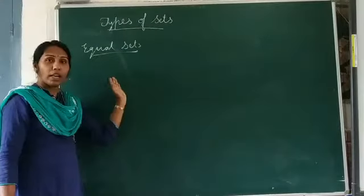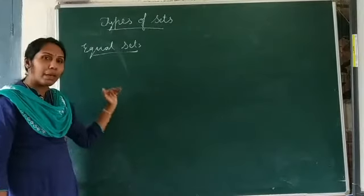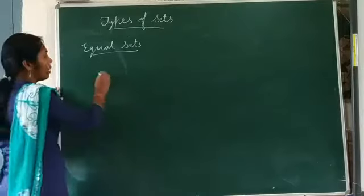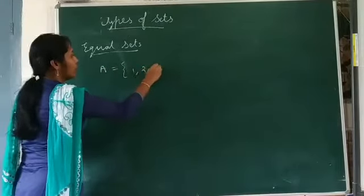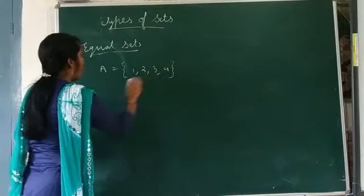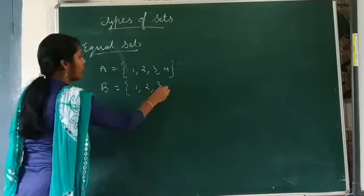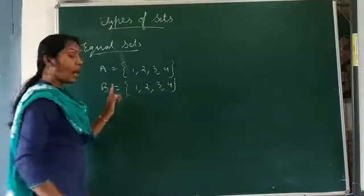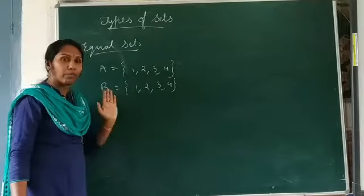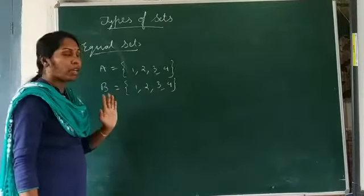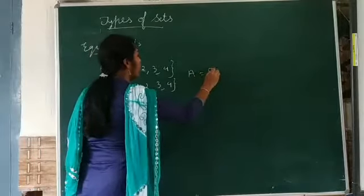Now, let us see what are equal sets. If two sets have exactly the same elements, they are known as equal sets. For example, A is equal to {1, 2, 3, 4} and B is equal to {1, 2, 3, 4}. Both of these sets have equal number of elements and the elements are exactly the same. Therefore, these two sets are known as equal sets, denoted as A = B.